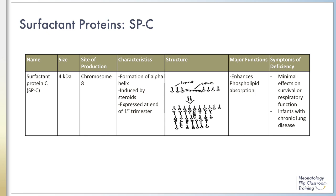Surfactant protein C is expressed on chromosome 8 and is first expressed at the end of the first trimester. It is also induced by steroids in vitro. In SPC knockout mice, there is minimal effect on respiratory function or survival, and human respiratory disease in the neonatal period caused by surfactant protein C deficiency has not been described.